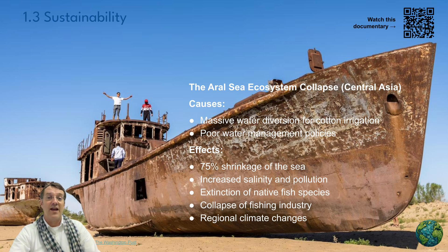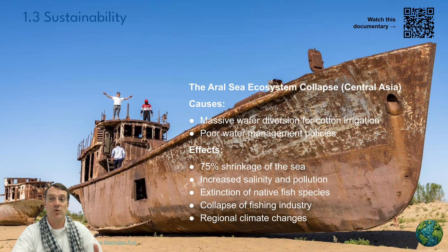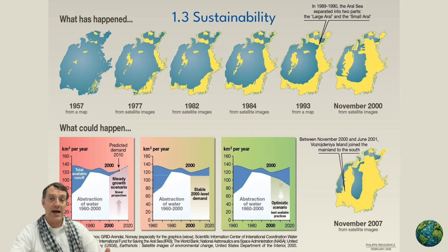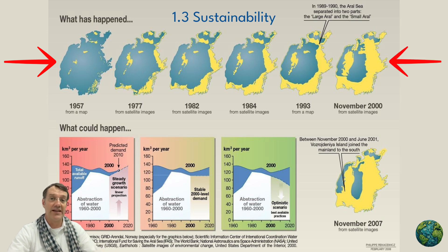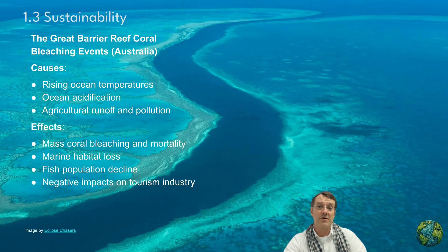Fish species adapted to the pre-saline environment went extinct, the fishing industry collapsed, and because the large body of water had been regulating regional climate, the local climate also changed — affecting agriculture in the area. A series of maps provides a dramatic visual representation of this ecosystem collapse in Central Asia.